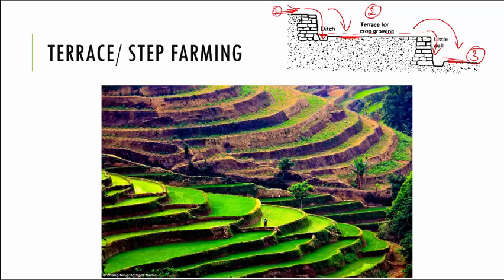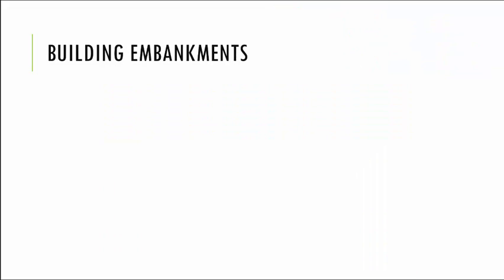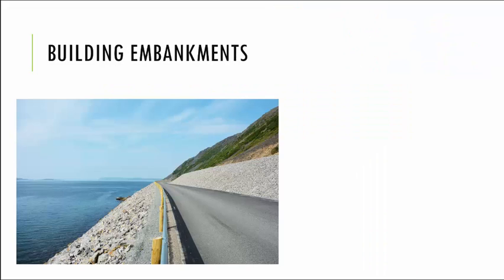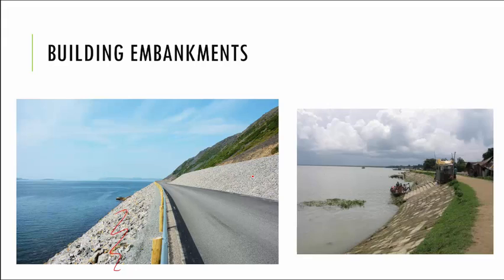The next method is called building embankments. Rivers constantly erode soil on their banks because as rivers keep flowing along the banks they take away all the soil from there. So very strong embankments of soil and rock are built along the edges of the riverbank to prevent soil erosion by water.